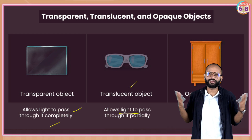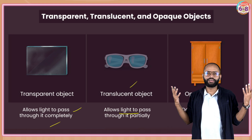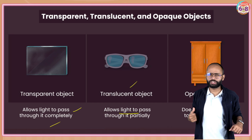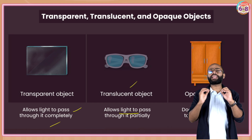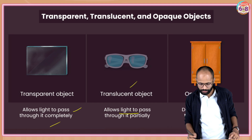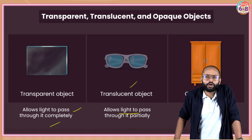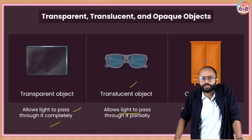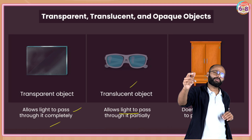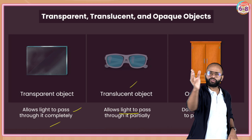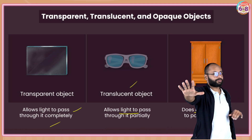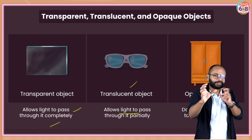Opaque objects - you can't see behind me, right? I'm an opaque object; I do not allow light to pass through me. Objects which do not allow light to pass through them are called opaque objects. Very simple terminology: opaque means does not allow light to pass, transparent means allows light to pass completely, translucent means allows light to pass partially.